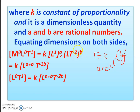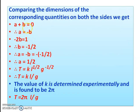Comparing left-hand side M⁰ L⁰ T¹ with right-hand side L^(a+b) T^(−2b), we equate the powers. For L: a plus b equals 0. For T: minus 2b equals 1, so b equals minus one half.